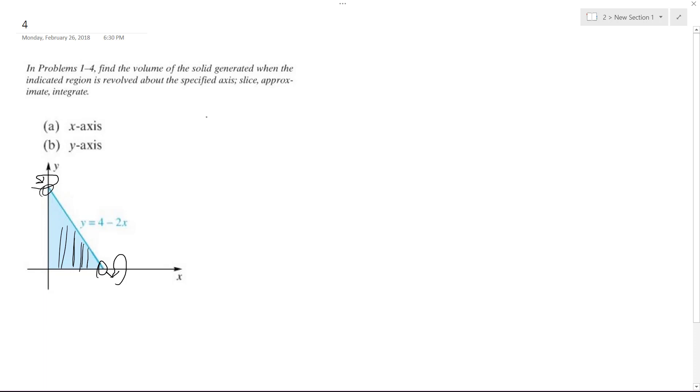So we're going to use pi r squared, and we're integrating, so pi from zero to two of four minus two x squared dx. So we get pi times sixteen minus eight x. So we get pi times sixteen x, and then plus four x squared.